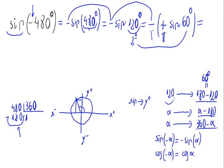So, the minus sign with the plus sign is a minus sign. And now, as we should know by the theory, the sinus of 60 degrees is the square root of 3 divided by 2. So, this is the result of the sinus of minus 480 degrees.